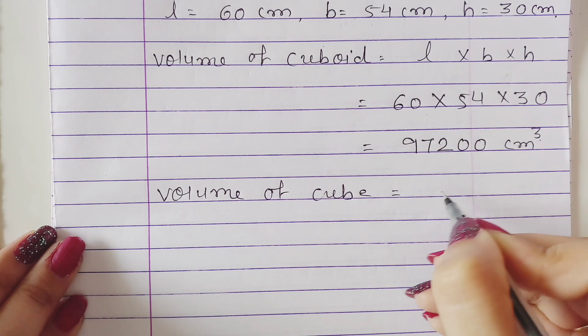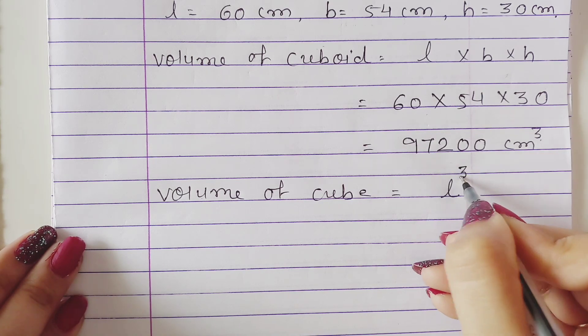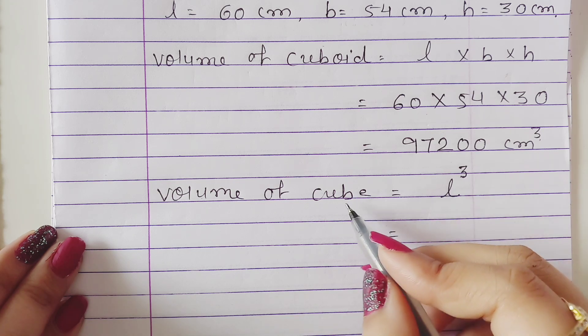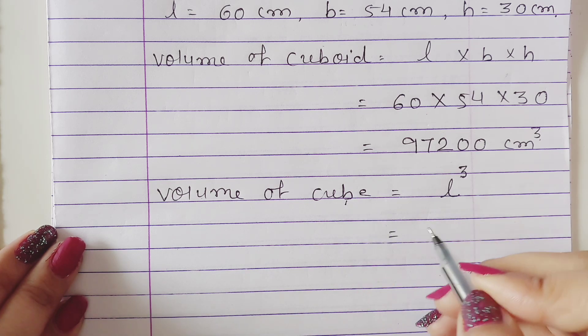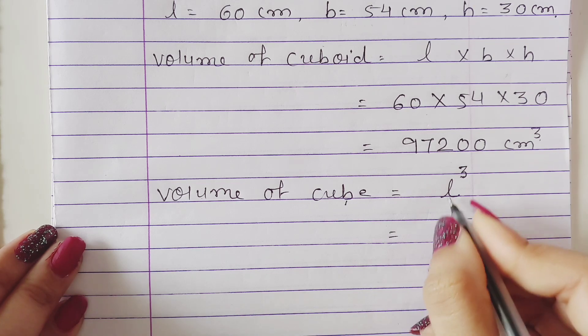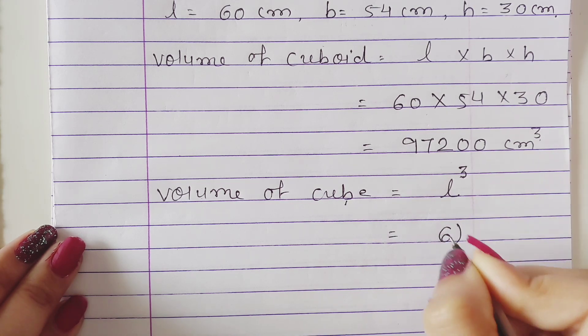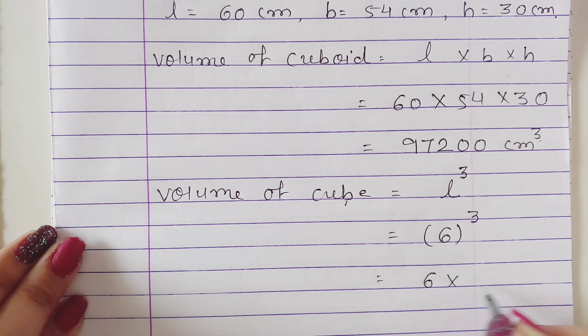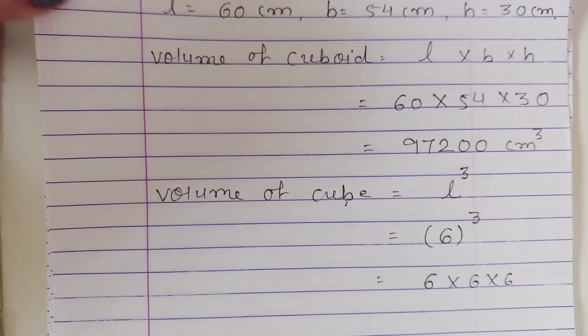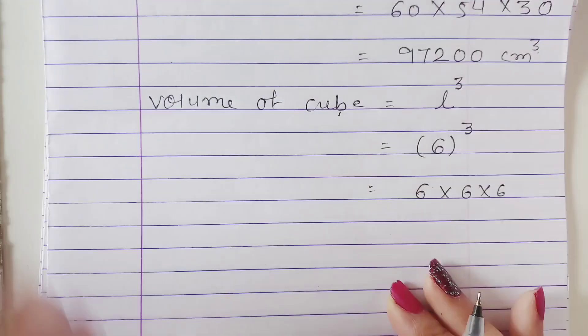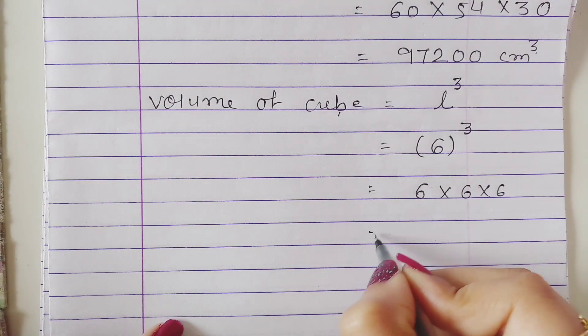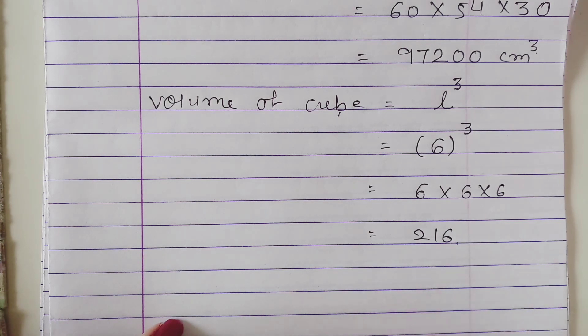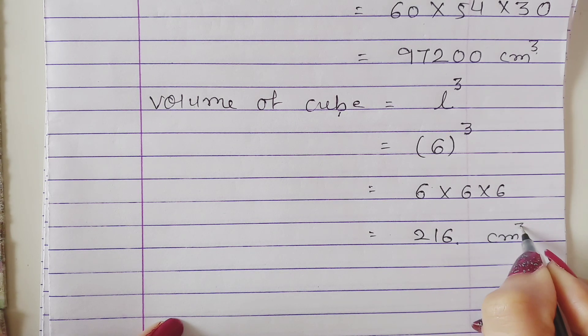Now we will find the volume of cube. So here, length is 6 cm. This is a cube, so we will multiply this three times. 6 times 6 is 36, and 36 times 6 is 216. So this is the volume of cube.